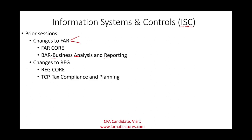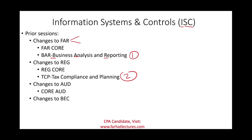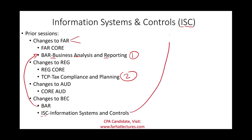We're going to have three specializations: one is BAR, two is tax compliance and planning, and changes to audit — mostly audit will remain a core. The fourth part, BEC, will partially become part of BAR, and the remaining part will become part of information systems and controls, which is what we're going to be discussing today.